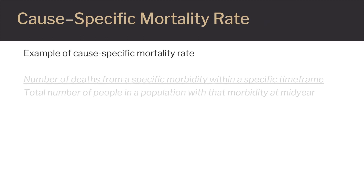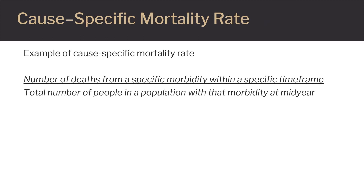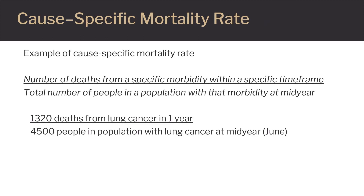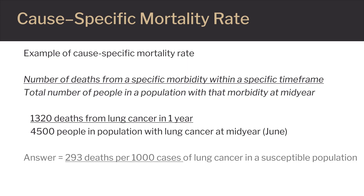This slide details how to calculate a cause-specific mortality rate. Note that the answer is most commonly expressed as x deaths per 1,000 cases from a specific disease out of all people diagnosed with that disease within a specific period of time, usually measured by mid-year June census numbers.